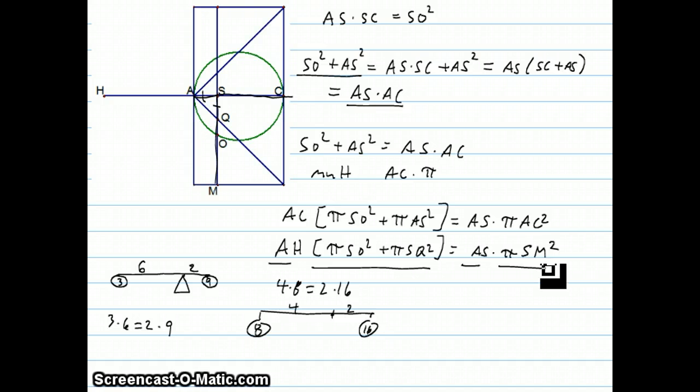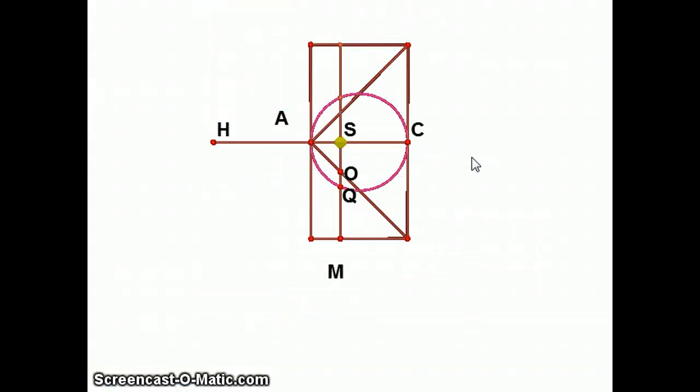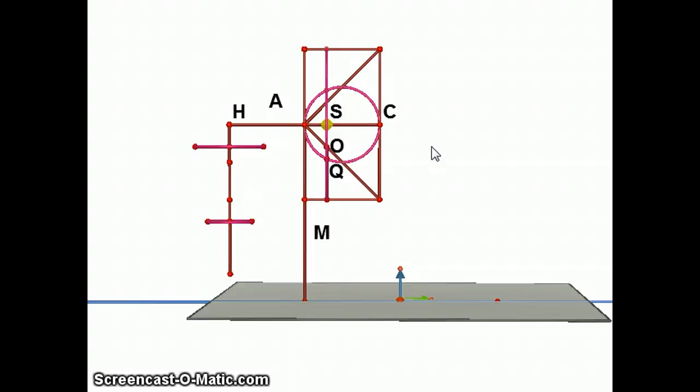We have something times something else equals something times something else. So he's going to establish that if I had circles, if I had a circle that had radius SM, and I put it at a distance of AS from the center of a fulcrum, it would balance out two circles, one with radius SO and one with radius SQ, if they were at a distance of AH from the center.